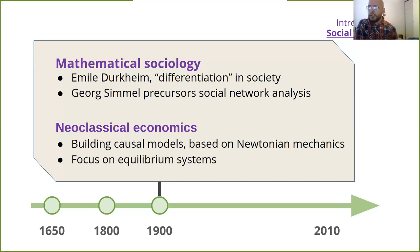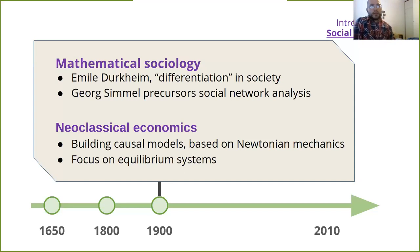Georg Simmel can be thought of as one of the first sociologists who built theories emphasizing the dynamics of triads in interpersonal relationships and the web of group affiliations. In other words, he was pioneering work that later became more formalized as what we now know as network science. This work was done in the early 20th century, but the formalization only came during the 1950s.